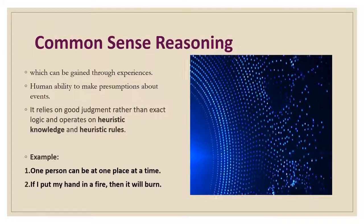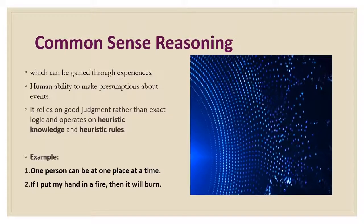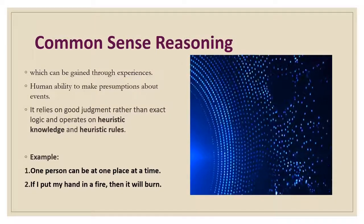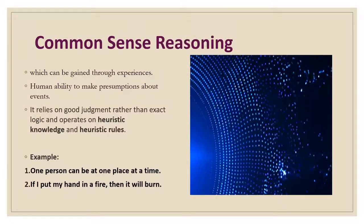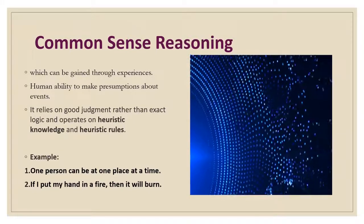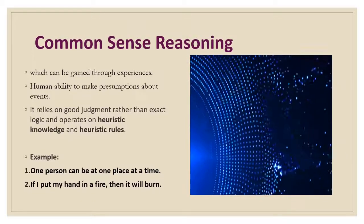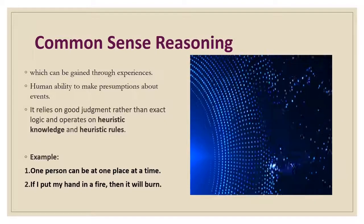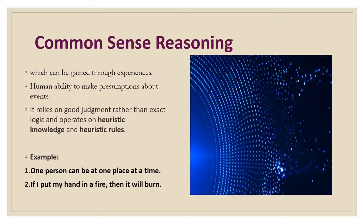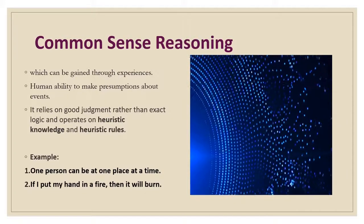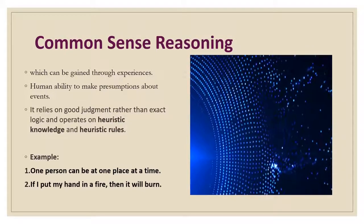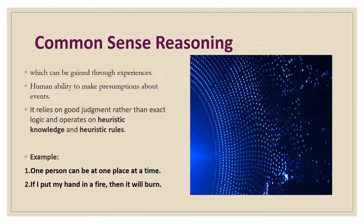The next one is common sense reasoning. This is an informal form of reasoning which can be gained through experiences. Common sense reasoning reflects human ability to make sense of events that occur every day. It relies on good judgment rather than exact logic, and operates on hypothetical knowledge and rules. Examples include: one person can only be at one place at a time; and if I put my hand in the fire, then it will burn. These are things a human mind can easily understand and assume.